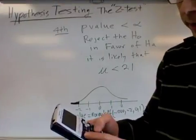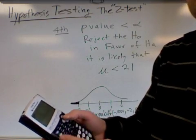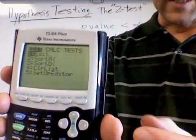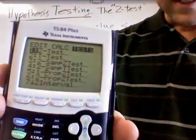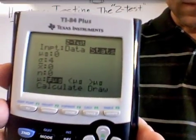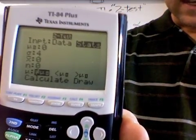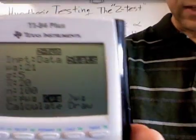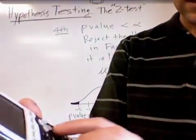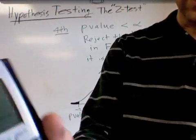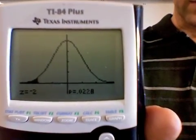On my calculator, if I go to the stat button—if I go to the stat button and slide to tests—I'm performing a z-test and I can choose statistics and type in the statistics that we were given. So if you set your screen to look like this, you can choose draw and it will give you the same picture that was up there along with the p-value.